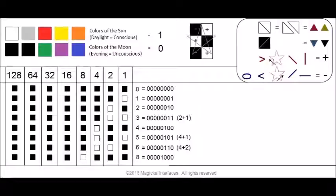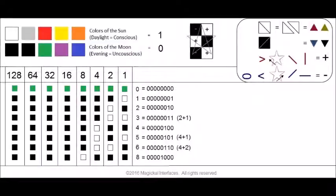In binary, when we want to get a number we turn on switches corresponding to a number. The values are 1, 2, 4, 8, 16, 32, 64, and 128. Depending on which column you turn on you get that particular number, and you add up the ones that are on. In the first row we have all black squares, which correspond to off, so we get the number 0.